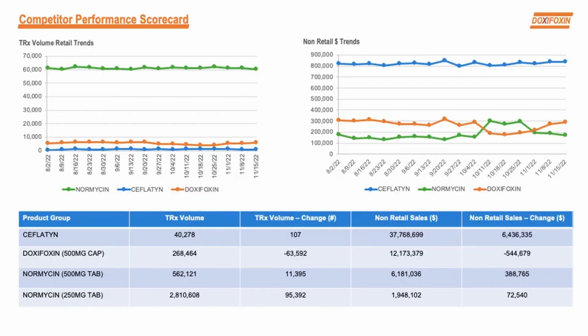The dashboard I'll use is a sales performance dashboard from a pharmaceutical company. It takes a look at how the company's main antibiotic, doxafoxin, compares to other treatment options on the market, comparing sales performance between the retail sector and the non-retail sector. Now, I'm sure whoever built this dashboard knows exactly what they're meant to see when they look at this. But for me, things are a little less intuitive, and that'll help guide me in my redesigns.